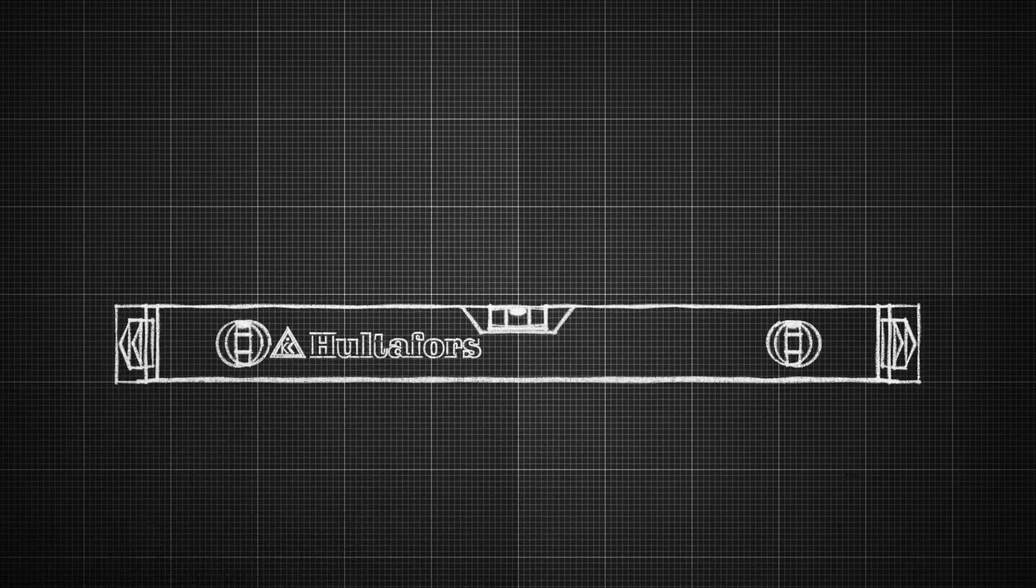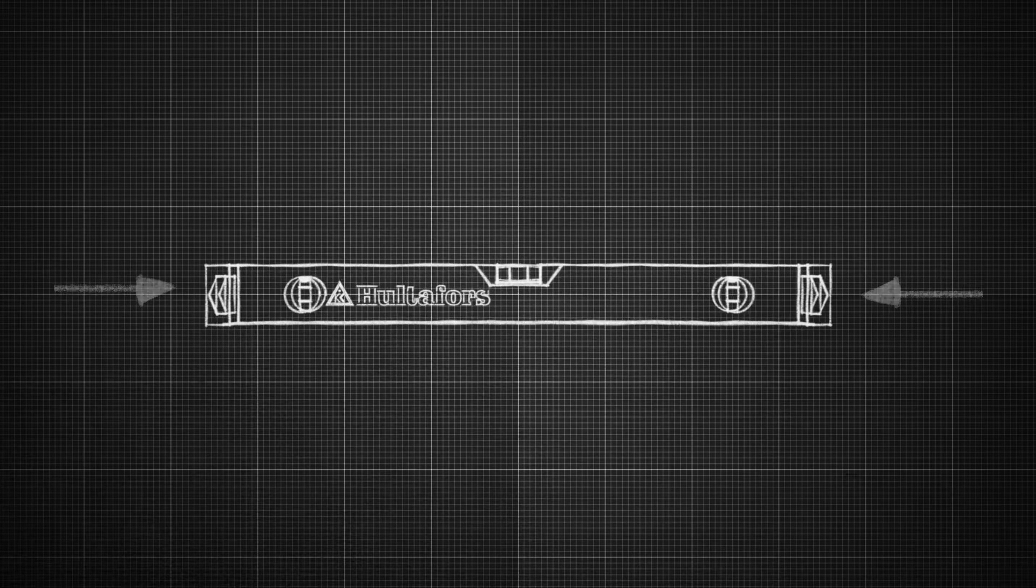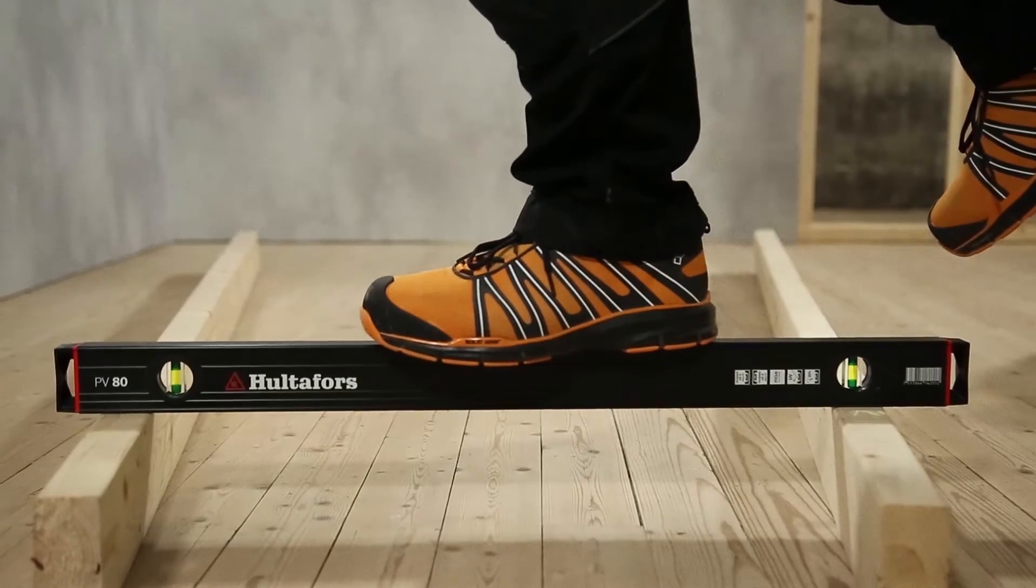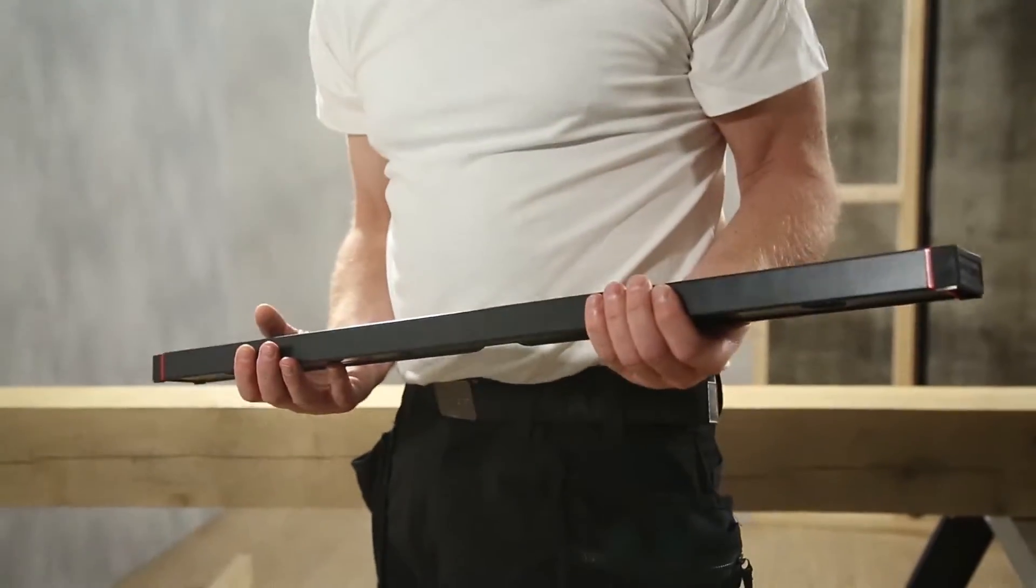The strength of the profile is checked to see how it withstands large pressures from above and to the sides. The weight is a good indication of profile quality. Hultafors spirit levels all weigh more than 500 grams per meter.